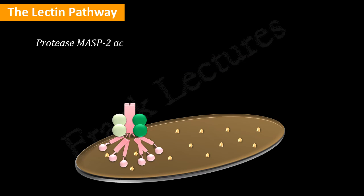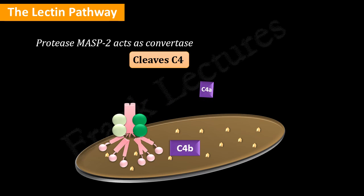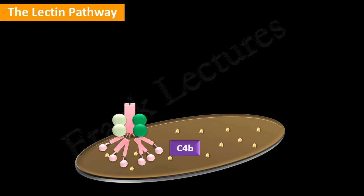MASP2, the protease of this MBL complex, acts as a convertase. It cleaves C4, a complement protein, into C4A and C4B. C4B binds covalently to the microbial surface, while C4A is released.